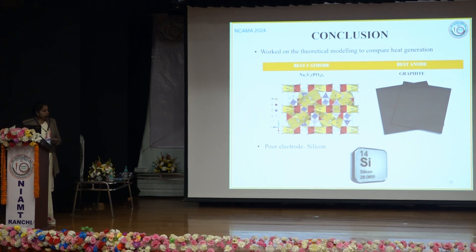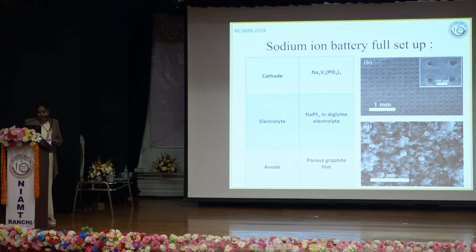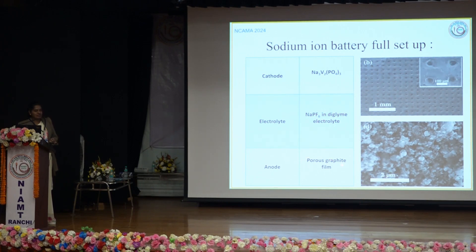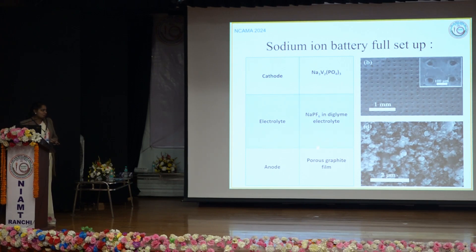The best cathode found for NIB is sodium vanadium phosphate; the best anode is graphite; and the poor electrode for NIB is silicon, which is good for lithium ion batteries. The ideal full setup should be: cathode of sodium vanadium phosphate, electrolyte of sodium salt NaPF₆ in diglyme, and anode of porous graphite film. Porous graphite is needed because conventional graphite has interlayer gaps far smaller than the diameter of sodium ions, so porous graphite is required for sodium ion batteries.